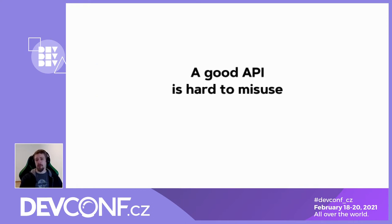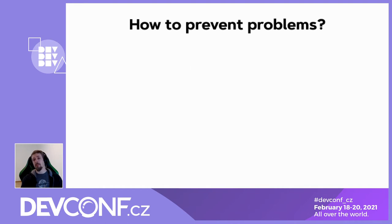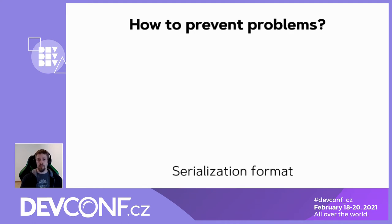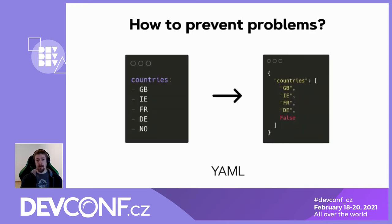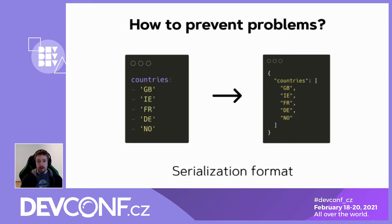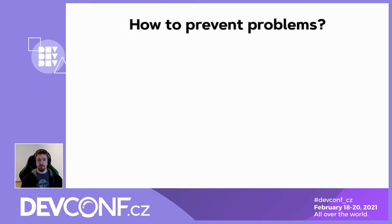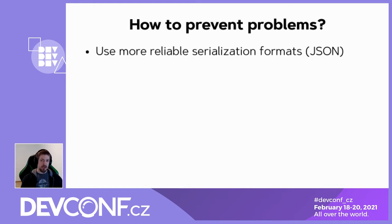In my opinion, the most important principle in API design is to make it hard to misuse. Here are some examples where we can prevent problems. Let's take a look at one of the most popular serialization formats, YAML. Here is a list of countries, but when we try to deserialize it, we might get not what we expected. It also applies to strings like yes, no, null, and so on. To solve these, we need to escape strings and then it's parsed correctly. And then maybe we can just use more reliable formats like JSON. At least we will know that there were no transmission errors and we don't work with a partially parsed schema.